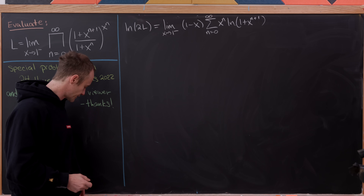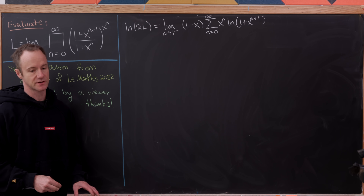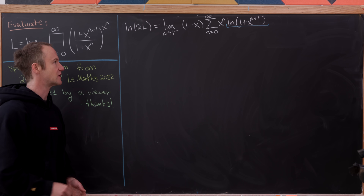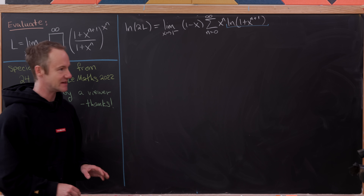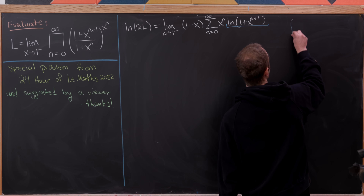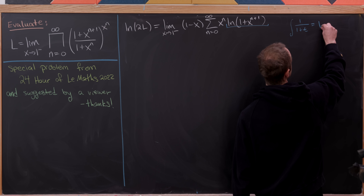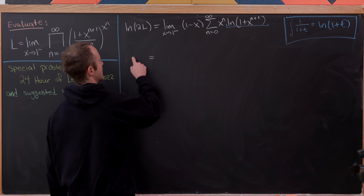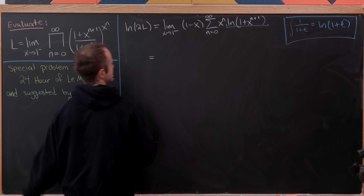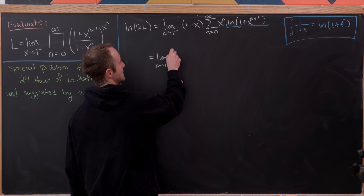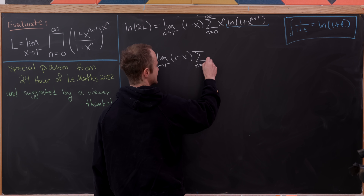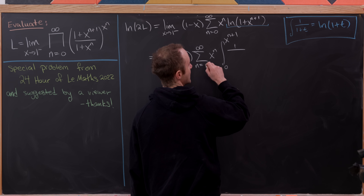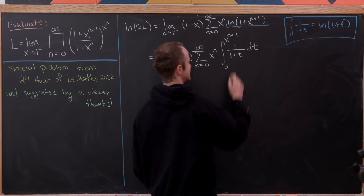This is already looking quite a bit nicer. Next I want to exchange the ln(1 + x^(n+1)) term with an integral, based on the fact that the antiderivative of 1/(1+t) is ln(1+t). So we can write ln(2L) as the limit as x goes to one from below of (1 − x) times the sum as n goes from zero to infinity of x^n times the integral from zero to x^(n+1) of 1/(1+t) dt.